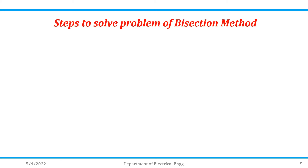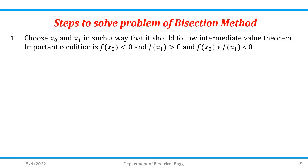Steps to solve a problem using the bisection method. Step 1: choose x0 and x1 such that they follow the Intermediate Value Theorem. The important condition is f(x0) < 0 and f(x1) > 0, and f(x0) × f(x1) < 0. The value of x that gives a negative f(x) is treated as x0, and the remaining value is x1.